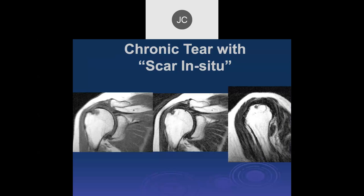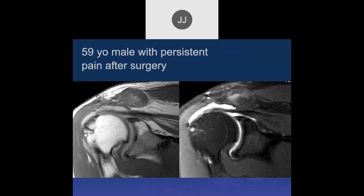In a case like this, given the chronic nature, you'd consider conservative treatment. Surgical options would involve tendon transfers around the shoulder, such as latissimus dorsi, making this a very complex reconstruction — not something done arthroscopically with just a simple repair. Newer procedures for chronic massive tears will be discussed in the surgical section.